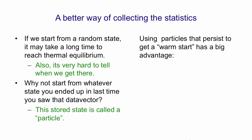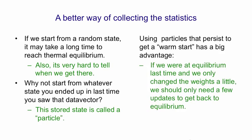Using particles that persist gives us a warm start, and it has a big advantage. If we were at equilibrium before and we only updated the weights a little bit, it'll only take a few updates of the units in a particle to bring it back to equilibrium. We can use particles for both the positive phase, when we have a clamped data vector, and for the negative phase, when nothing is clamped.